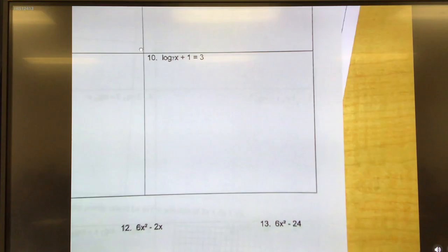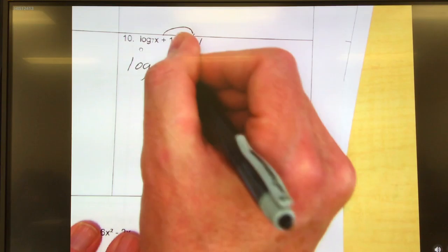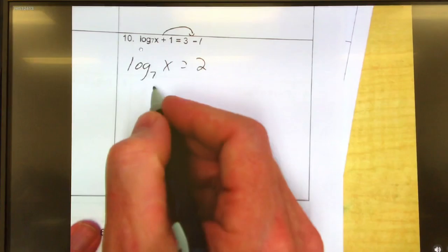Okay, notice that everything doesn't have its own log, so no problem. Move that 1 across if it comes up minus 1 or negative 1. So I have log base 7 of x equals 3 minus 1 is 2. So now I've got to convert it. Base stays the base. That's 7 to the second power equals x. So x equals 49. Too easy.